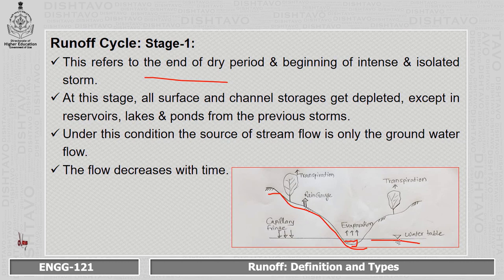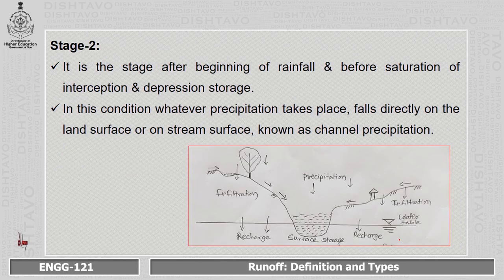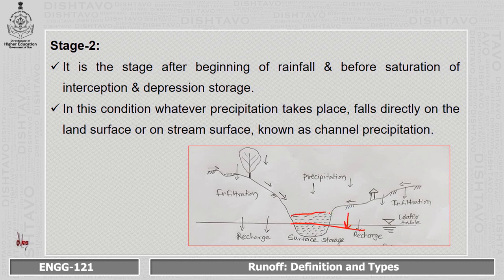In Stage 2, after the beginning of rainfall and before the saturation of interception and depression storage, the water table starts recharging due to precipitation and water available in the stream also increases. In this condition, whatever precipitation takes place falls directly on the land surface or on the stream surface, which is known as channel precipitation.